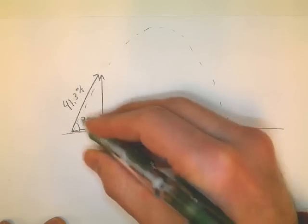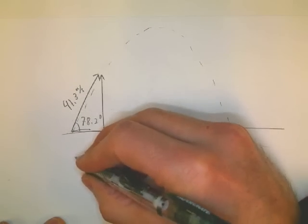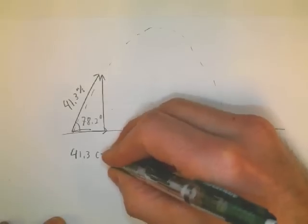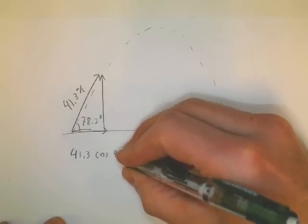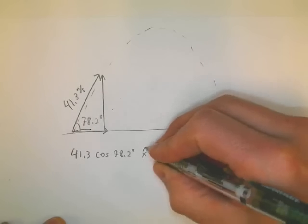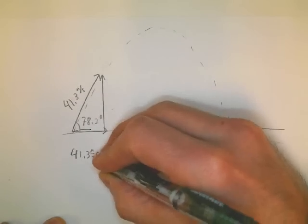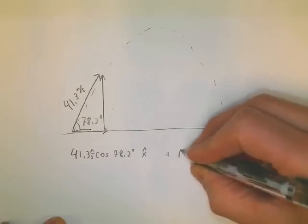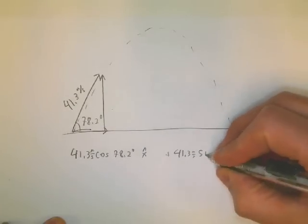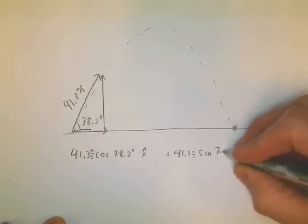It's 41.3 cos 78.2 degrees, and that's going to be in the x direction in meters per second. Then it's going to be 41.3 meters per second sine 78.2 degrees, and that's going to be in the y direction.